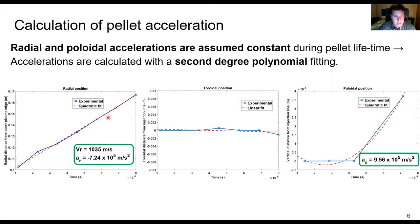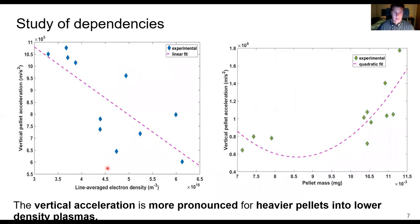If this process is repeated in different discharges, we can compare the values of the acceleration with the values of the line average electron density and the pellet mass. This study has allowed us to conclude that the vertical pellet acceleration is more pronounced for heavier pellets into lower density plasmas.